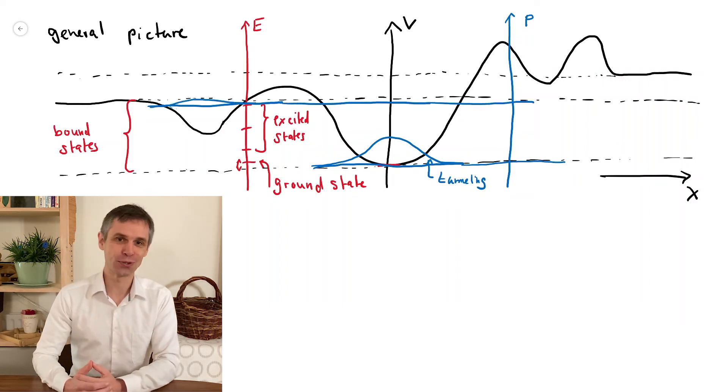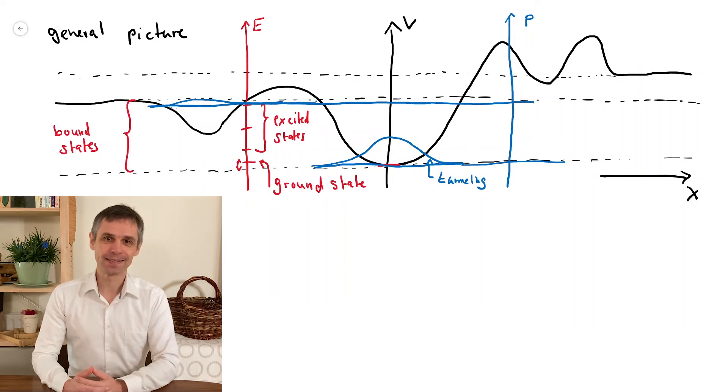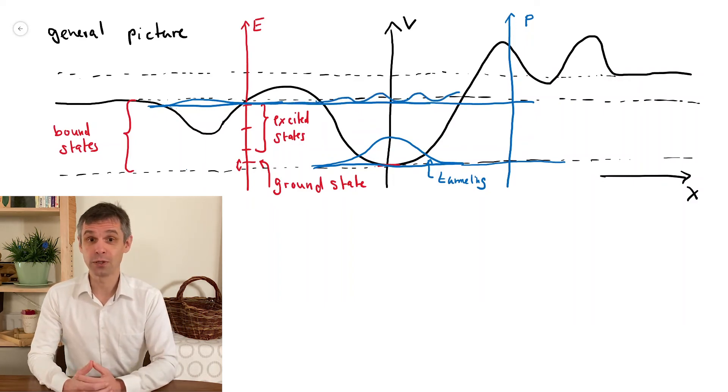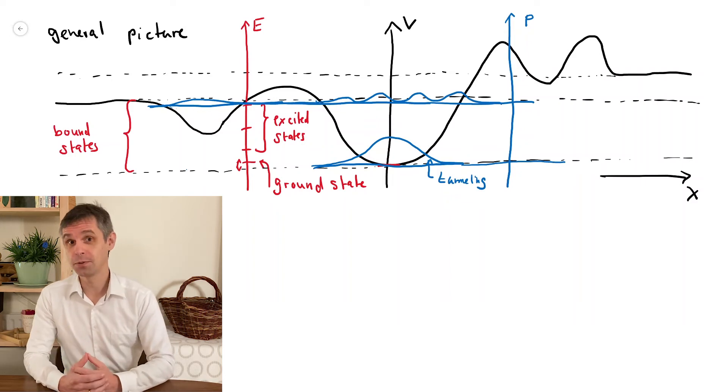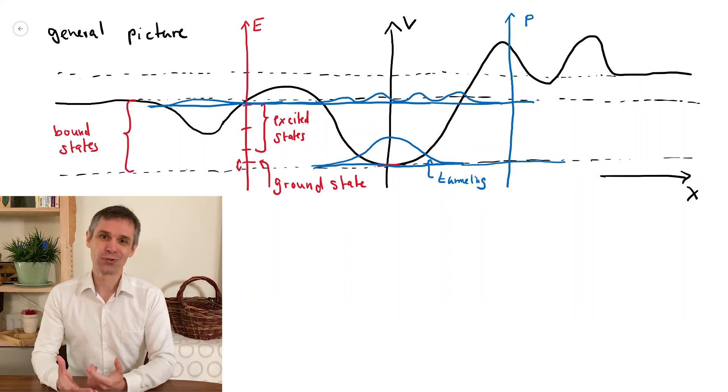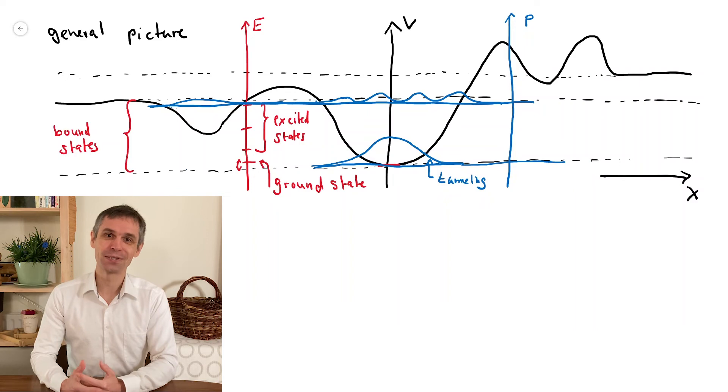For the example of the excited states sketched here, again with a conveniently chosen horizontal axis, we see that these tails can actually already mediate tunneling between different regions separated by a classically forbidden region. This can actually already occur in the ground state, it just depends on the potential.